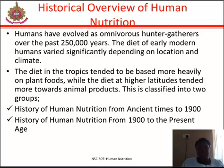In the 1860s, Claude Bernard discovered that body fat can be synthesized from carbohydrates and protein, showing that the energy in blood glucose can be stored as fat or as glycogen. In the early 1880s, Kanehiro Takaki observed that Japanese sailors developed beriberi, but British sailors and Japanese naval officers did not. Adding various types of vegetables and meat to the diets of Japanese sailors prevented the disease.